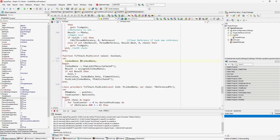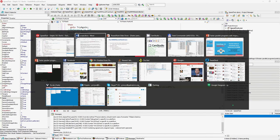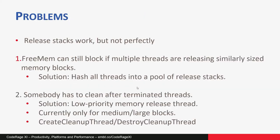I implemented this version and then found it only partially alleviated the problem. The program was a bit faster and there was less blocking, but there were still lots of blocking going on in FreeMem — because many threads were trying to return blocks of similar size at the same time, and then the release stack got full. Especially with this demo, which creates 12,000 objects and then destroys 12,000 objects, causing lots and lots of FreeMem calls.